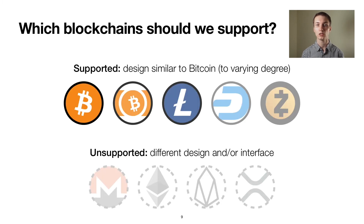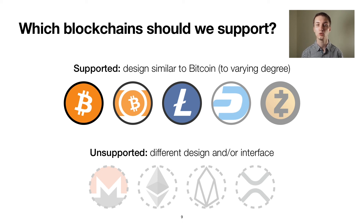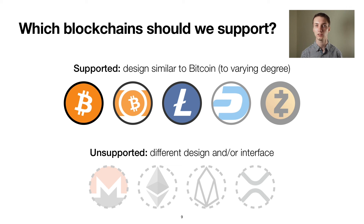The first big question that we had to answer was, which blockchains should BlockSci support? There are hundreds of blockchains, some of which differ from Bitcoin in minor ways, some which differ drastically. Supporting too few would limit BlockSci's usefulness, but supporting too many would make optimizations much harder. We decided to support cryptocurrencies whose transaction graph layout is similar to that of Bitcoin. Cryptocurrencies that make smaller changes to its functionality or design are partially supported. Cryptocurrencies with drastically different designs, such as Ethereum, are not supported.